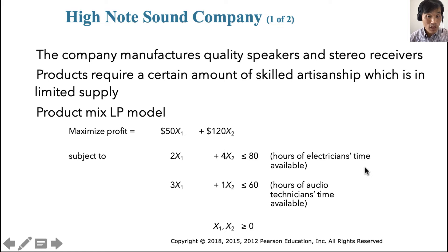And for the second constraint, you have hours of audio technician's time. The total available audio technician's time is 60 hours at this point, and it takes three technicians hours for speaker and one for stereo receivers. That's what these two constraints say to us. Given this situation, we find that you make $50 profit for speakers and $120 for stereo. So you make much more money in making stereo receivers rather than speakers.